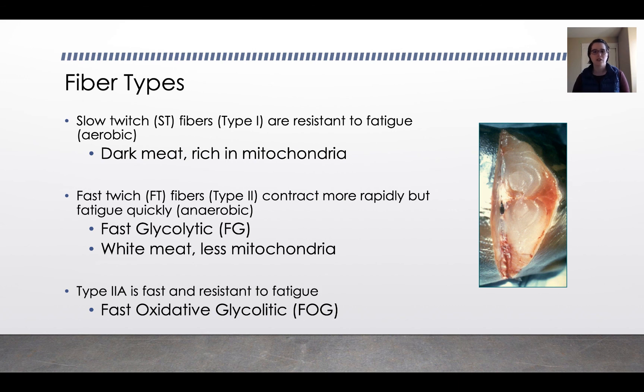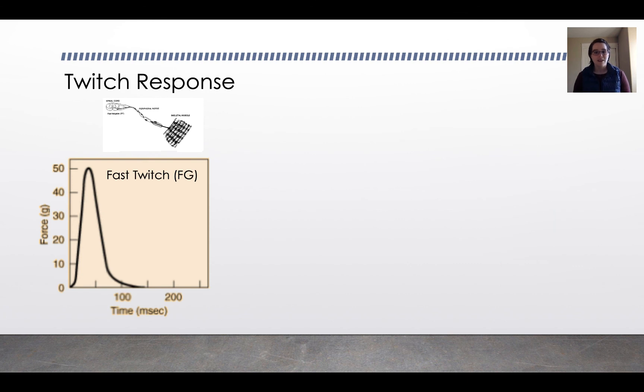So these are the three different types. The two primary types are fast twitch and slow twitch. Then type 2a, there's fewer of these in the body, but they kind of try and strike a balance between fast and slow twitch fibers.